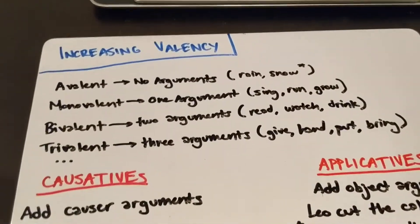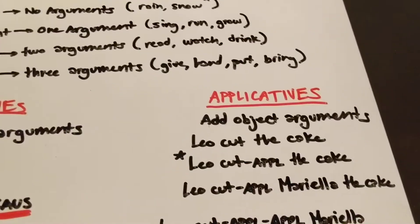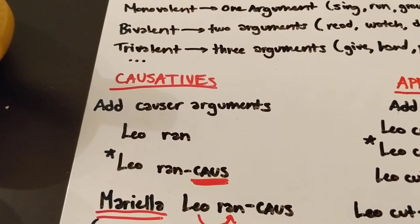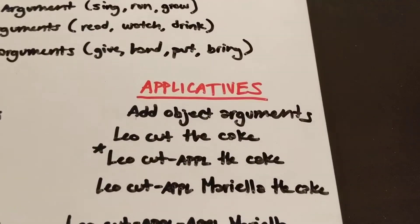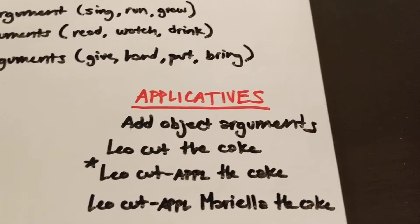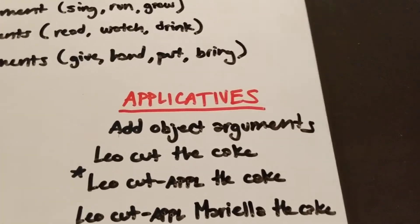The other route that we can take is applicatives, and applicatives do basically the same thing as causatives, except that they add object arguments instead of causing or subject type arguments.